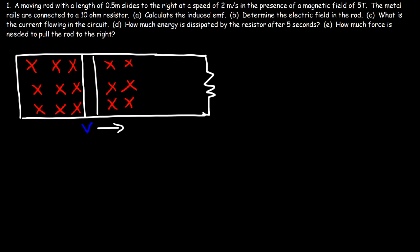A moving rod with a length of 0.5 meters slides to the right at a speed of 2 meters per second in the presence of a magnetic field of 5 tesla. The metal rails are connected to a 10 ohm resistor. Calculate the induced EMF in this circuit.